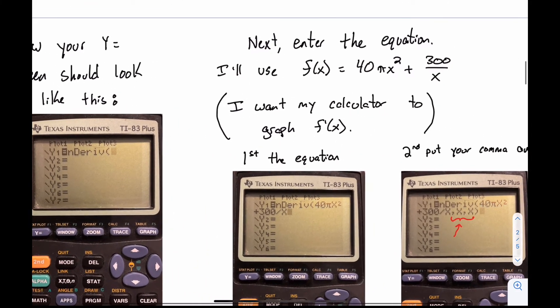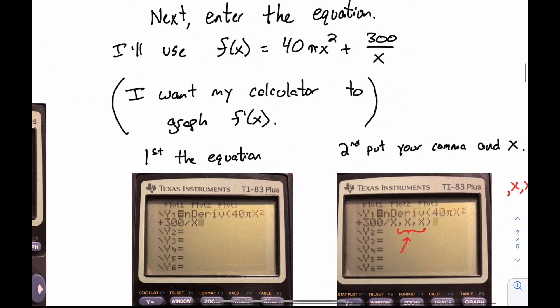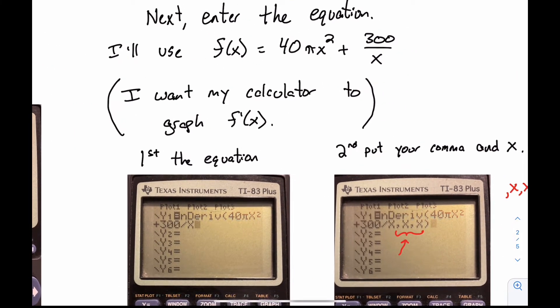And so you're going to enter the equation. So you need an equation to enter. So if you're just practicing, you can use the one I'm doing. We did this one in an example. It was an optimization problem. So I'm going to use 40 times pi times x squared plus 300 over x. Kind of a complicated one. And I want to graph the derivative. This is my original, right? So this is my original up here: 40πx² + 300/x. And I didn't take the derivative. I want the calculator to graph the derivative.